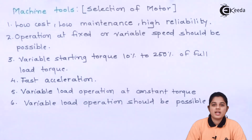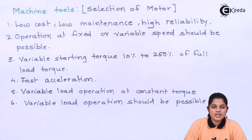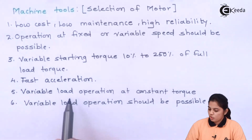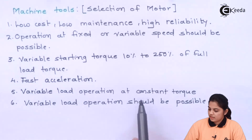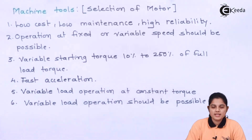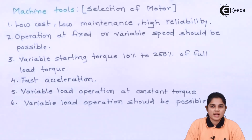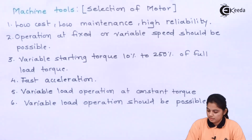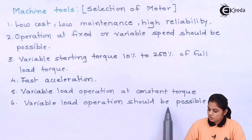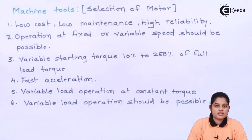Fast acceleration — the acceleration of your motor should be as fast as possible. Variable load operation at a constant torque: if the torque is constant, speed should be varied, but speed variation should not change your torque at that point. Your torque should remain constant.